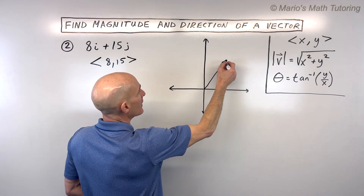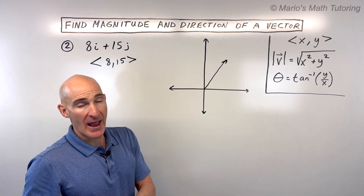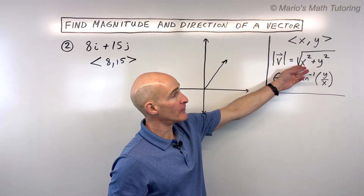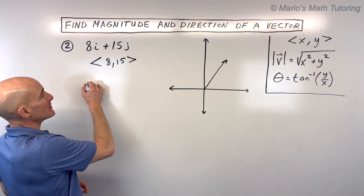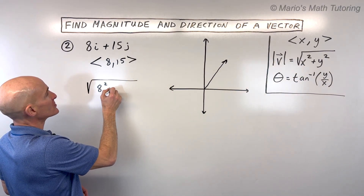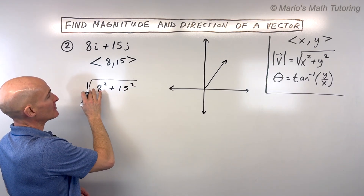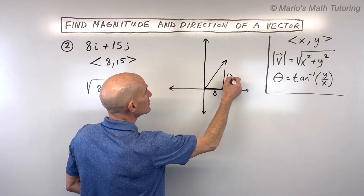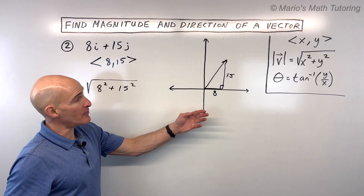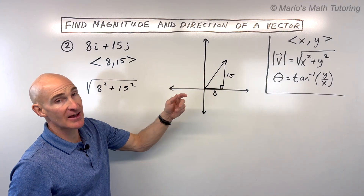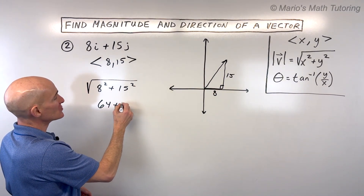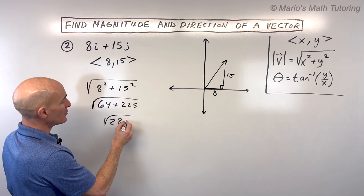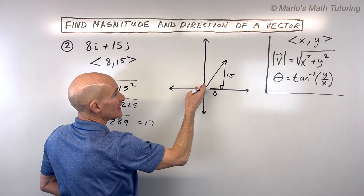So we're going 8 in the positive x direction and 15 in the y direction. If we draw our vector, it goes right 8, up 15. To find the magnitude — the length of this vector or how strong this force is — we use our formula: the square root of the x component squared plus the y component squared. You might notice this is a Pythagorean triple: 8, 15, 17. This comes out to 64 plus 225, which is the square root of 289, equal to 17.